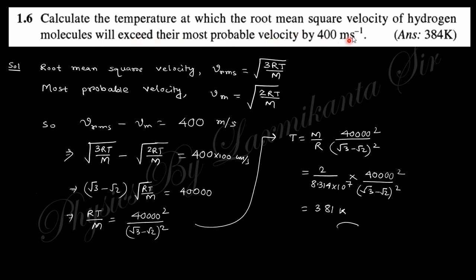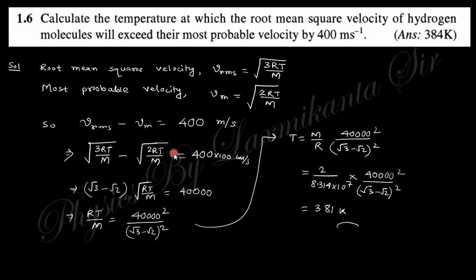Question six: calculate the temperature at which the RMS velocity of hydrogen molecules exceeds their most probable velocity by 400 m/s. Setting up the equation: √(3RT/M) − √(2RT/M) = 400 m/s. Squaring and solving with M = 2 × 10⁻³ kg in SI units (or using R in CGS units with M = 2 g), you can easily obtain the required temperature.